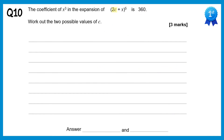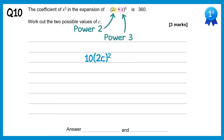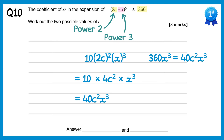In this question a equals 2c and b equals x. We want the coefficient of x to the power 3, so we take x to the power 3 and 2c to the power 2, since 3 plus 2 makes 5. The fifth row of Pascal's triangle gives coefficient 10. So we have 10 times 2c squared times x cubed. 2c all squared is 4c squared, so that's 40c²x³. We're told the coefficient is 360, so 360 = 40c², giving c² = 9 and therefore c equals 3 or negative 3.